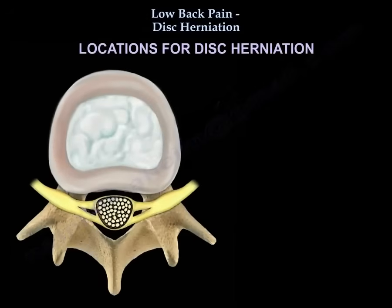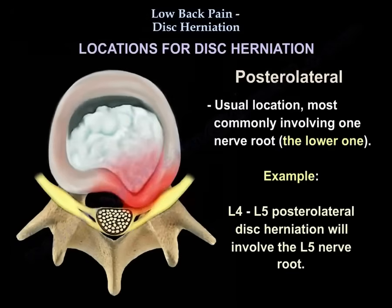What are the locations of disk herniation? The most common location, which is the typical location, is posterolateral. As you can see from the diagram, it affects the nerve root. It is the usual location, most commonly involving one nerve root — the lower one. For example, an L4-L5 posterolateral disk herniation will involve the L5 nerve root.